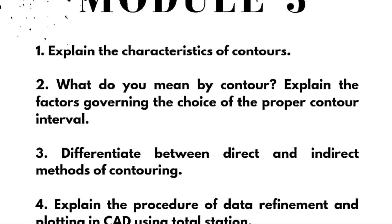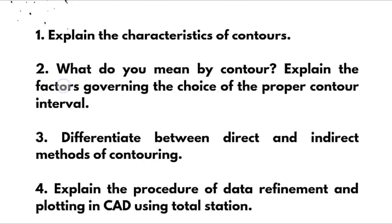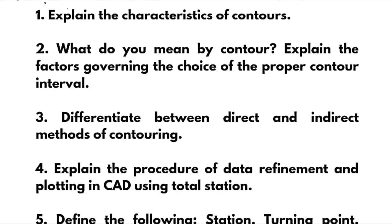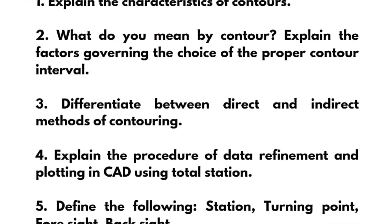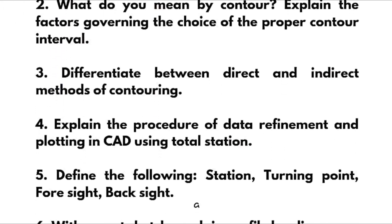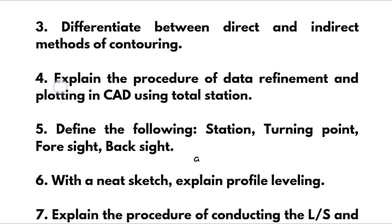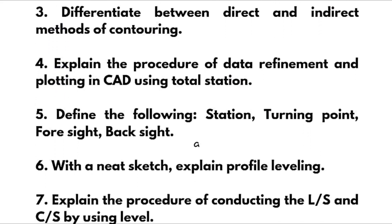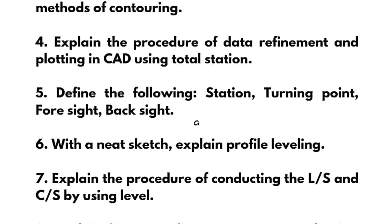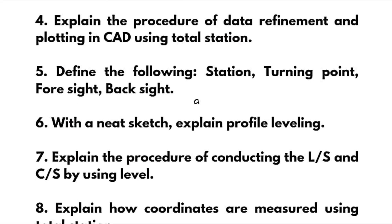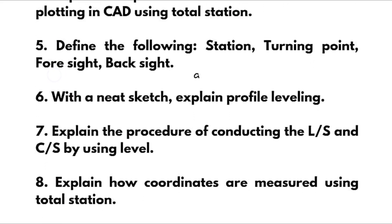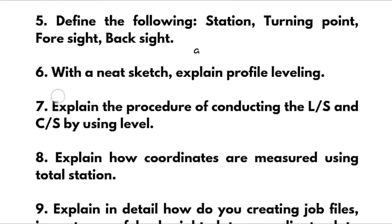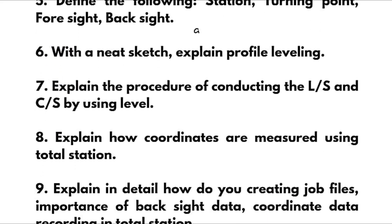The next passing module is Module 3. Questions include: Explain the characteristics of contours. What do you mean by contour? Explain the factor governing the choice of proper contour interval. Differentiate between direct and indirect methods of contouring. Explain the procedure of data refinement and plotting in CAD using total station. Define the terms: station, turning point, foresight, and backsight with a neat sketch. Explain profile leveling.